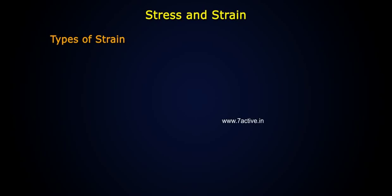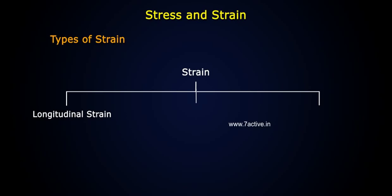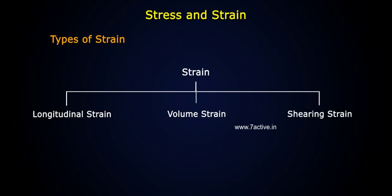Types of strain: Strain is of three types depending upon the change produced in a body and the stress applied. 1. Longitudinal strain. 2. Volume strain. 3. Shearing strain.